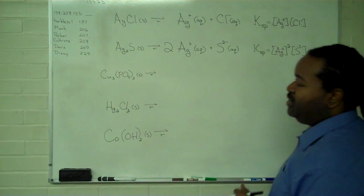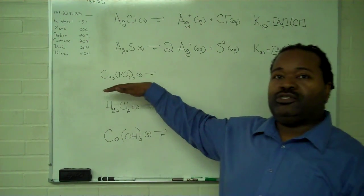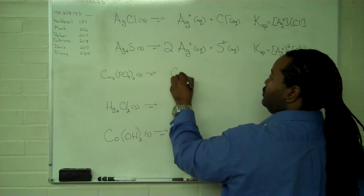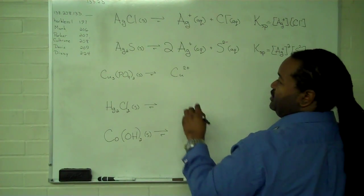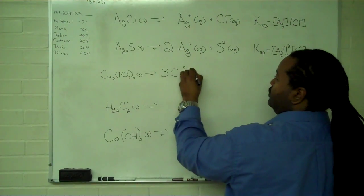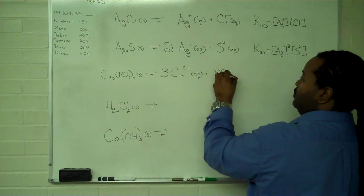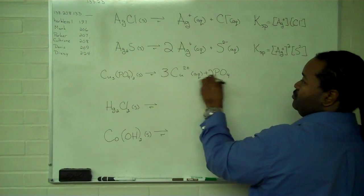For our copper two phosphate, we have copper two plus respecting stoichiometry, and that's in solution. And our phosphate ion also respecting stoichiometry.